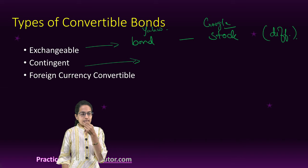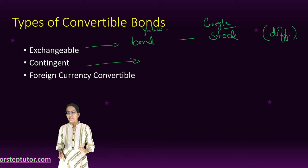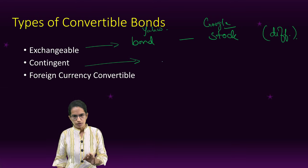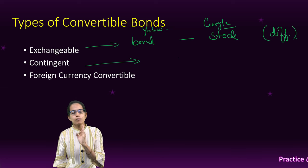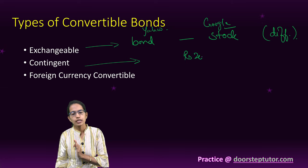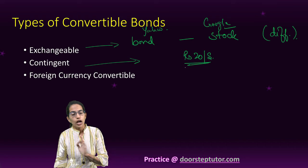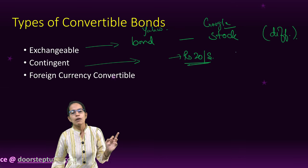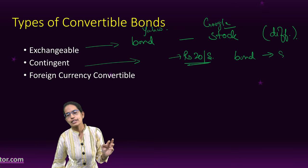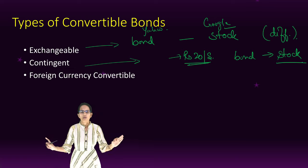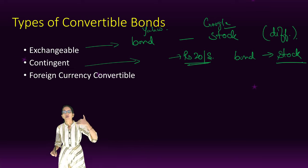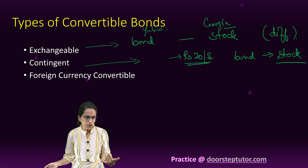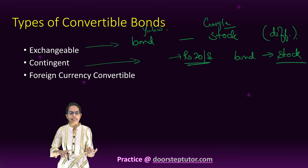A contingent convertible bond means that I have a bond for a given tenure, but I have committed to a share price of, let's say, 20 rupees per share. As soon as the market price goes above 20 rupees per share, my bond would automatically get converted into stock — none of them would have to do anything. The bond would automatically transform from bond to stock as soon as the price goes beyond 20 per share.